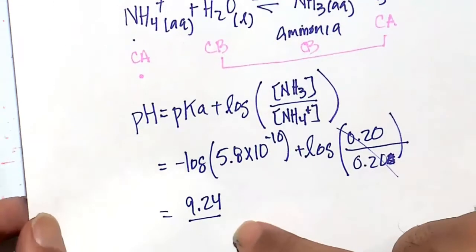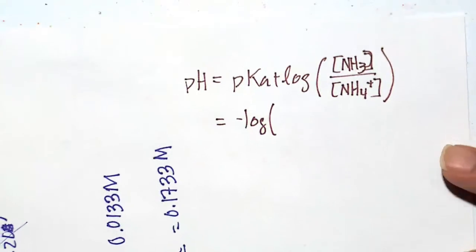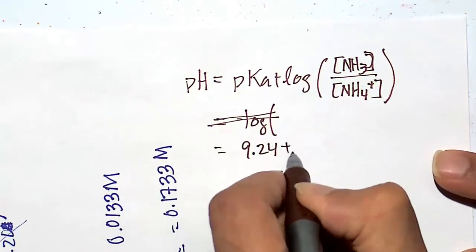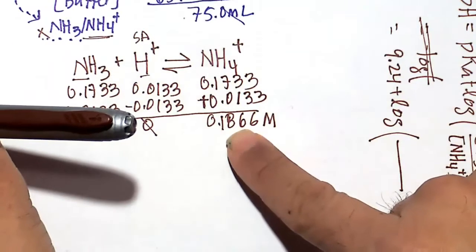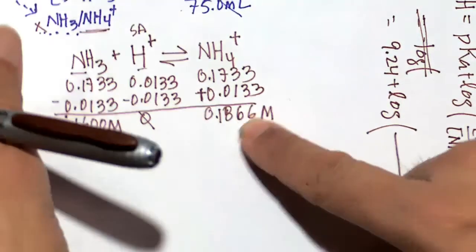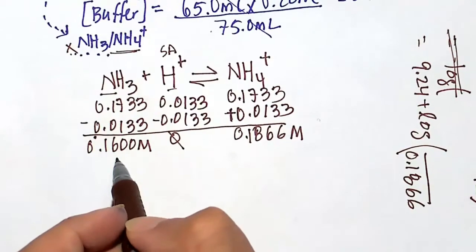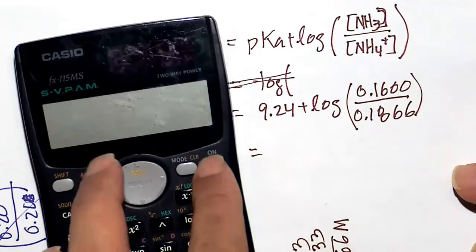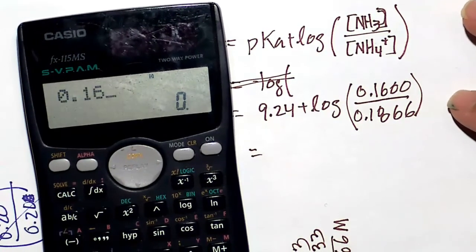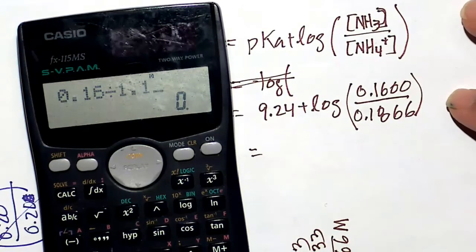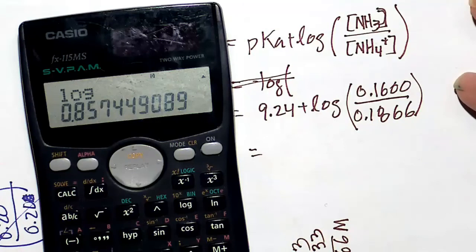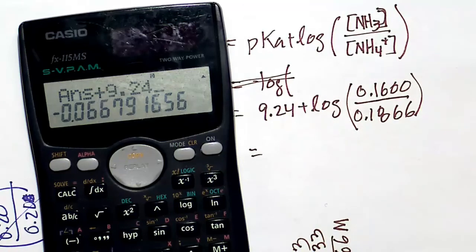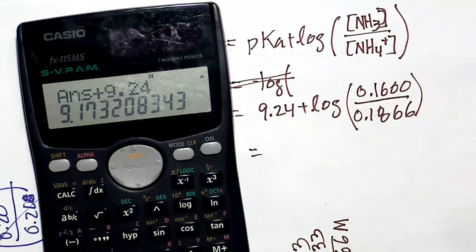pKa is minus the log of Ka. We already got that in part A, which is about 9.24. So to avoid any extra math, I'll just go ahead and write that in. pKa is 9.24 plus the log of NH3 over NH4+. NH4+ is 0.1866 in the denominator, and the numerator NH3 is 0.1600. Let's do this on our calculator. First thing we'll do is compute the fraction 0.16 divided by 0.1866, we'll log that, we get minus that number, and then plus the 9.24. This gives us our final answer of 9.17.